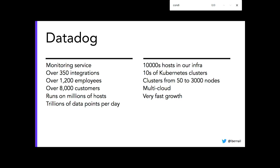I work at Datadog, a SaaS monitoring company. What matters most is we run a pretty large infrastructure with a lot of Kubernetes clusters, some of them very big — up to 3,000 nodes. As we run large clusters, we've had a few issues with Kubernetes, some of them related to accessing services at this scale. That's why I got very involved with kubeproxy, and in particular with IPVS mode for kubeproxy.